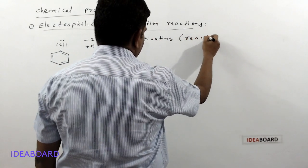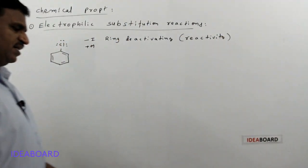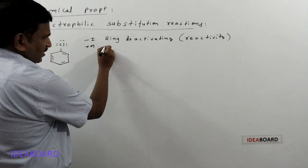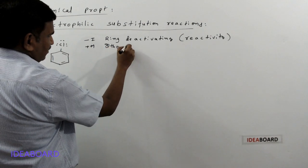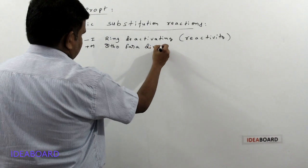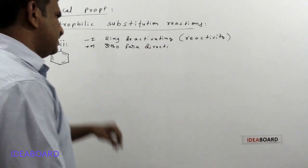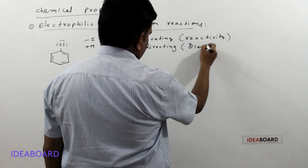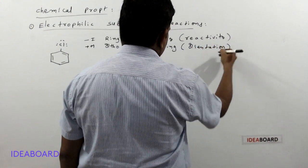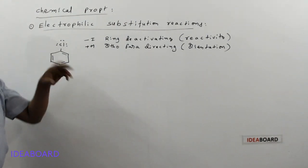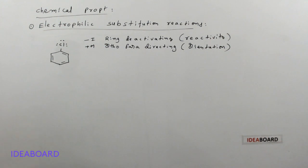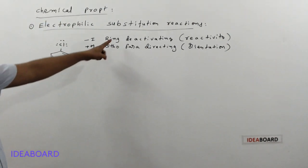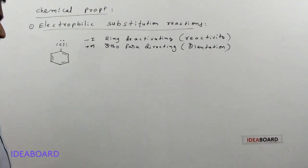Due to the minus-I effect, reactivity is less and drastic conditions are required. The plus-M effect indicates ortho-para directing. This is an ortho-para directing group, so orientation is influenced by the mesomeric effect. The direction of the incoming electrophile is indicated by the Cl due to the plus-M effect. So chlorine is a ring deactivating group and ortho-para directing group.